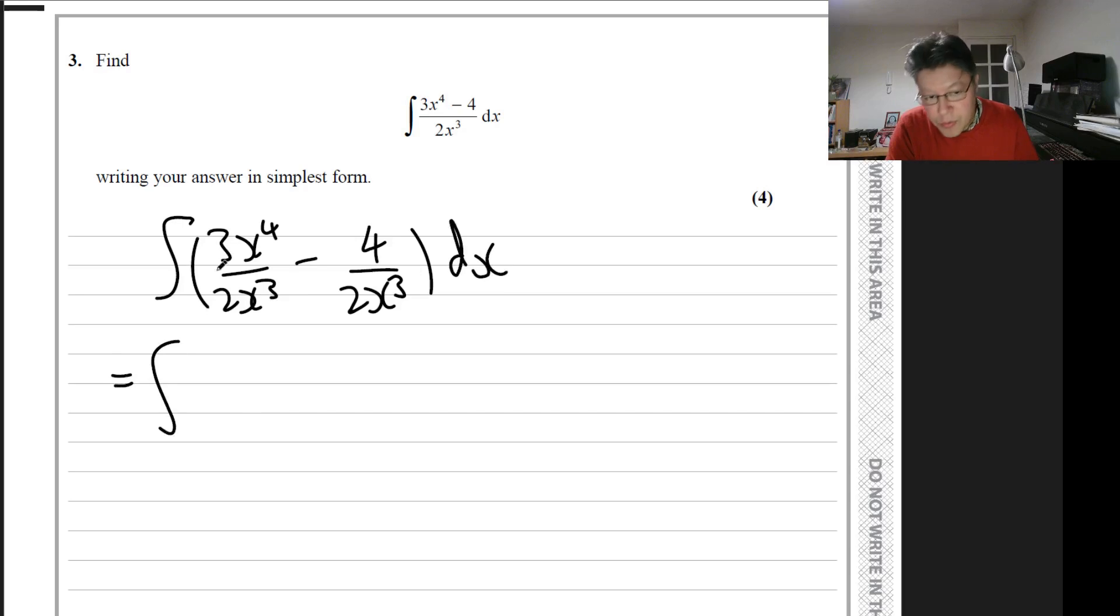Now we'll simplify each term. So this becomes 3x over 2 minus 2x to the minus 3.